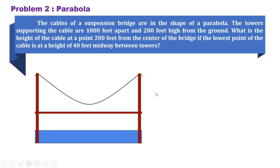For problem number 2 involving parabola, let's say this is the suspension bridge, and it is stated in the problem that the towers are 1,000 feet apart and 200 feet in height from the ground. If we look at this on a Cartesian plane, we can say that these two points would be at (500, 0) and at (negative 500, 0). This is the vertex of the cable, and that would be (0, 40). And since this is the lowest point of the cable, midway between towers.